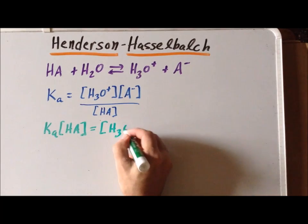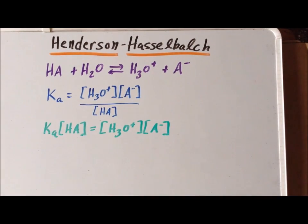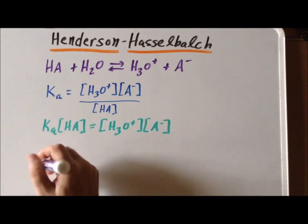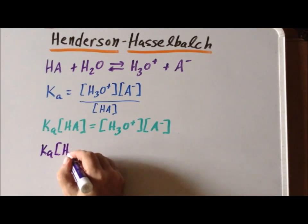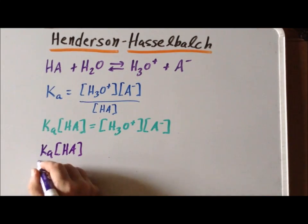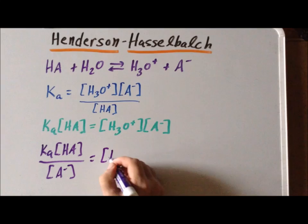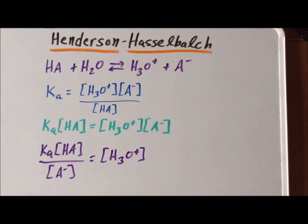Rearranging, Ka times the concentration HA divided by the concentration A minus is equal to the hydronium ion concentration.